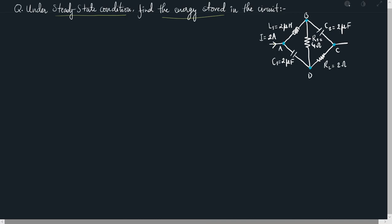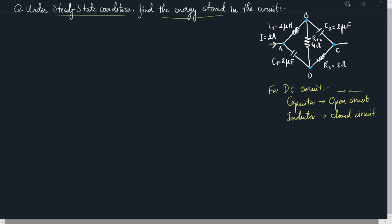For a DC circuit, the capacitor acts like an open circuit and the inductor acts like a closed circuit. The open circuit is represented by two separated lines, and the closed circuit is represented by a continuous line. If you look at this circuit diagram, you can see three components.